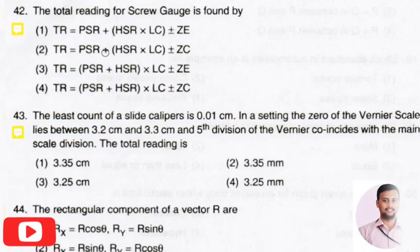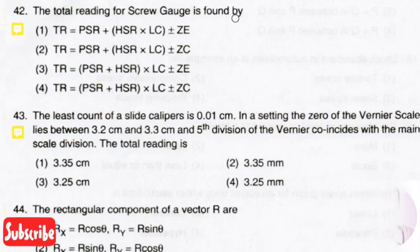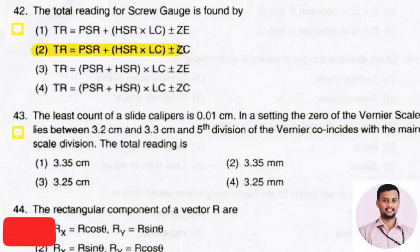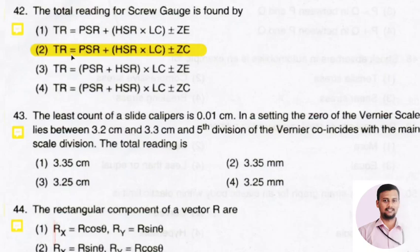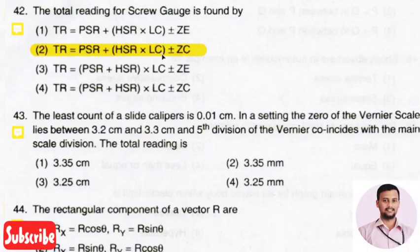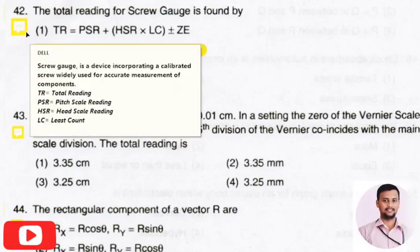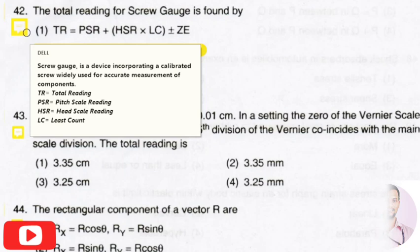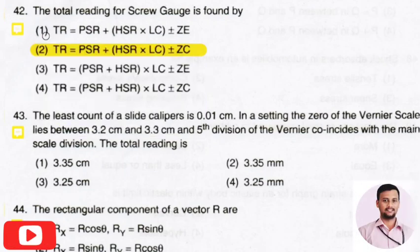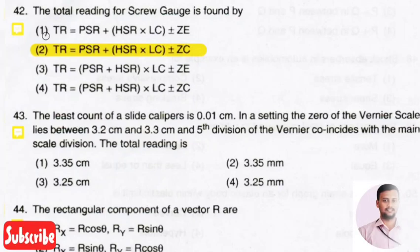The next question: the total reading for a screw gauge is found by? The right answer is option 2 — total reading equals pitch scale reading plus head scale reading multiplied by least count, with a plus or minus error. A screw gauge is a calibrated measuring device used to measure components or substances, and it gives more accurate readings compared to other measuring devices.